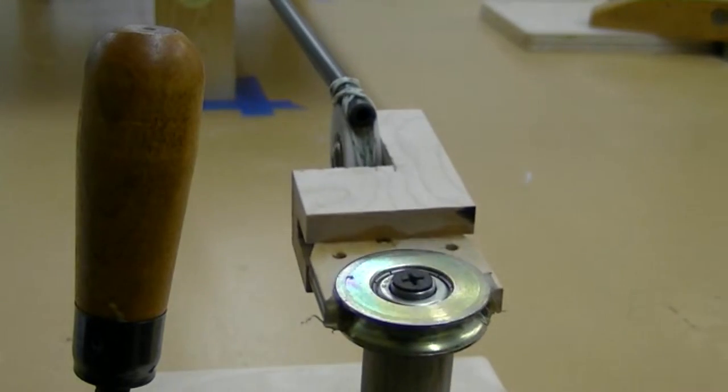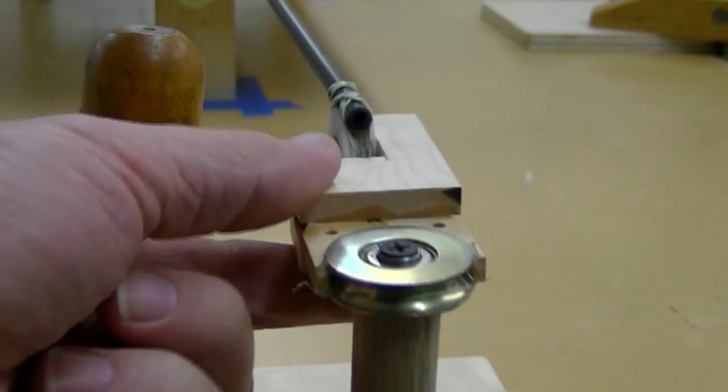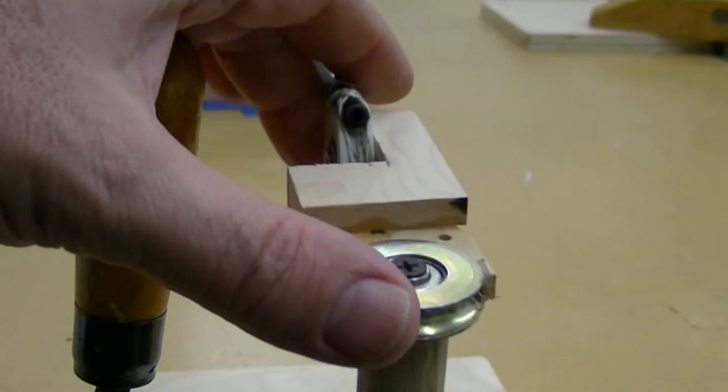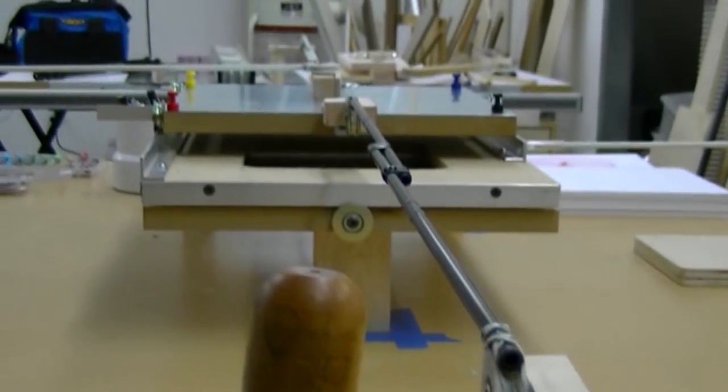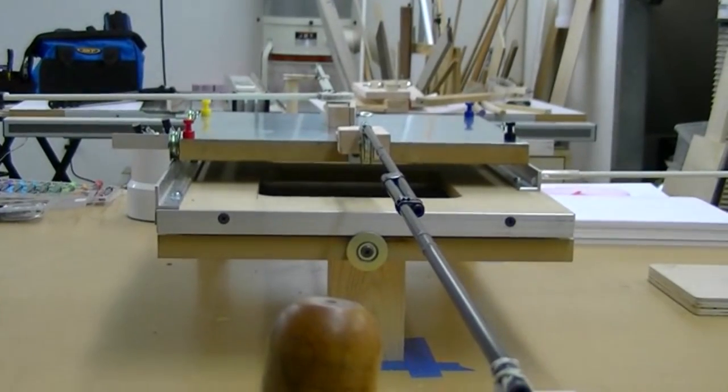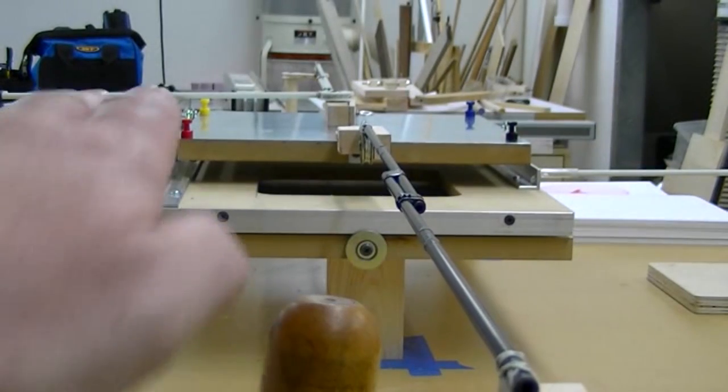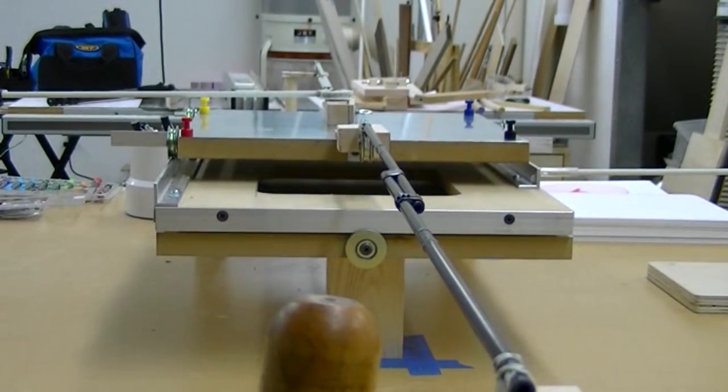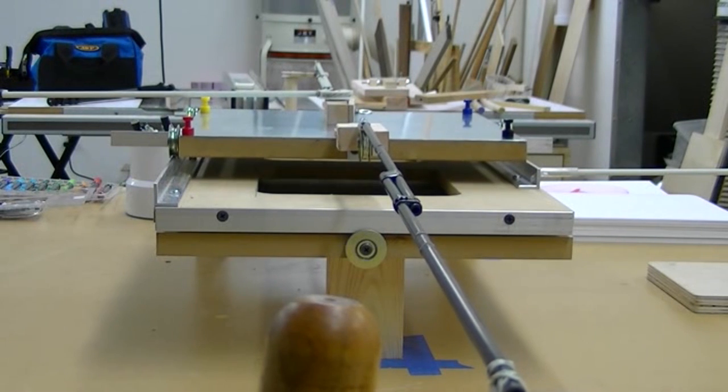The top of this pendulum arm has a double bearing at 90 degrees to one another because the upper table that holds the paper moves both this way and the pendulum moves in an arc. So that allows both motions without inducing any extra friction.